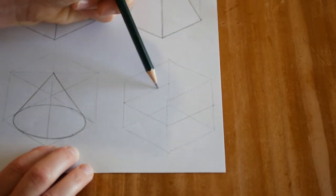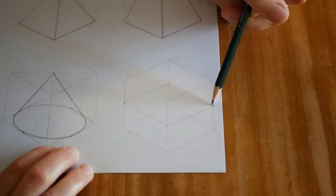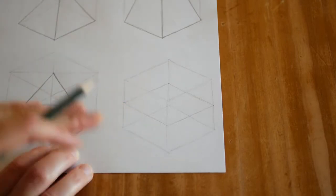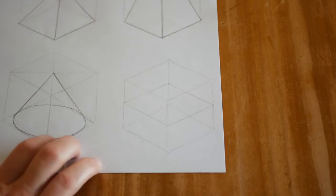This is like a plane in the middle of our rectangle, our cube, and this is where we're going to draw our circle, our ellipse.